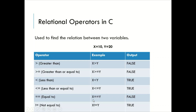Next, we have equal to, which checks whether two values are equal or not. If both are equal, it returns true; otherwise false. In this case, it returns false as the value of x is 10 and y is 20. Opposite to that is not equal to. It returns true when the values are not equal and returns false when the values are equal. So in this case, 10 is not equal to 20, so the output of this expression will be true.